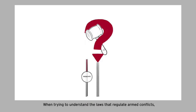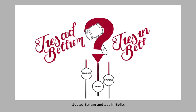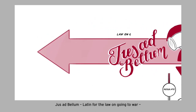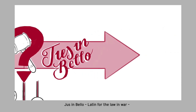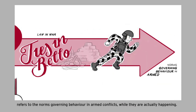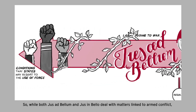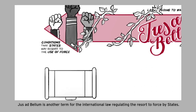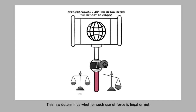War termination isn't just about signing documents. When trying to understand the laws that regulate armed conflicts, we often encounter two terms that tower over the subject: jus ad bellum and jus in bello. Jus ad bellum — Latin for 'the law on going to war' — refers to the conditions under which states may resort to the use of force. Jus in bello — Latin for 'the law in war' — refers to the norms governing behavior in armed conflicts while they are actually happening. While both deal with matters linked to armed conflict, they refer to different branches of law.